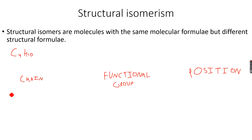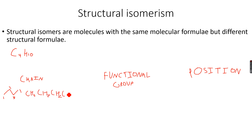We can have an alkane where you can count one, two, three, four carbon atoms. This is CH3 CH2 CH2 CH3, and this is called butane — 'but' because it has four carbon atoms, and 'ane' because it's an alkane.